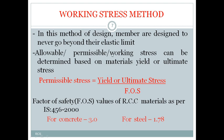The allowable, permissible, or working stresses can be determined based on the material's yield or ultimate stresses. For calculating permissible stress, the formula is: permissible stress = yield or ultimate stress divided by FOS, where FOS refers to factor of safety.